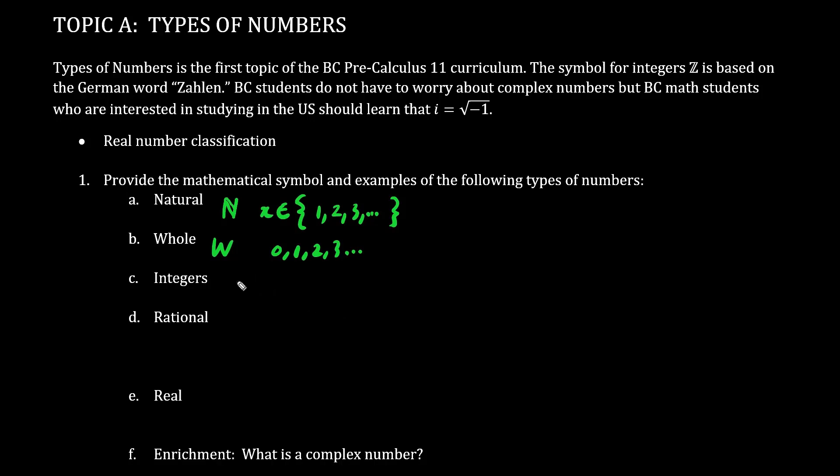Whereas integers, the letter Z for Zahlen, also include negative numbers such as negative 3, negative 2, negative 1, 0, as well as positive numbers 1, 2, 3, etc. We can go towards the positive infinity direction as well as the dot dot dot negative infinity direction.